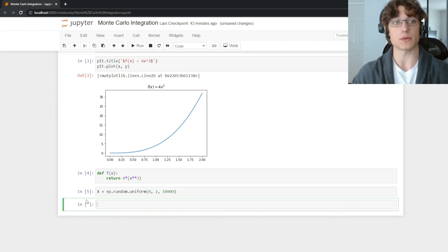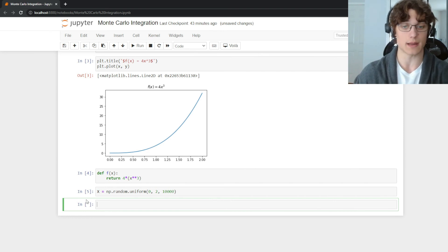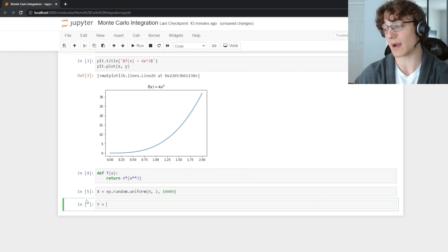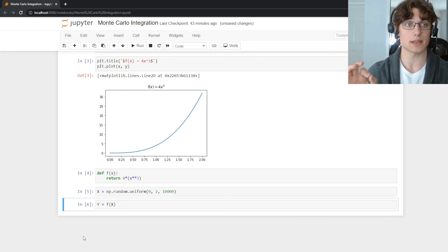Now we're going to come up with those green strips. We're going to evaluate each of these points in the domain according to the function that we have defined here. So we'll say capital Y is equal to f of capital X and that is going to evaluate each of the points in our sample at the function 4x cubed.